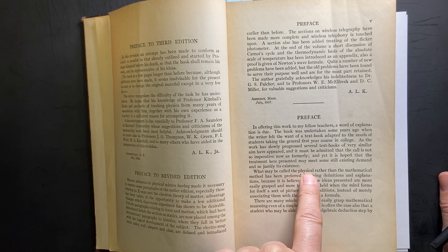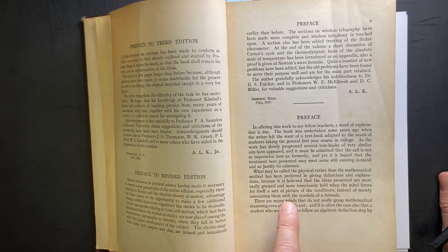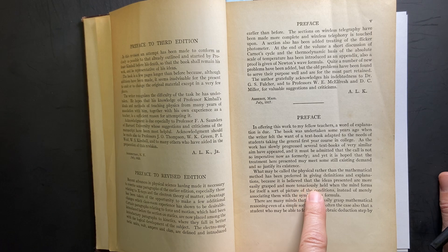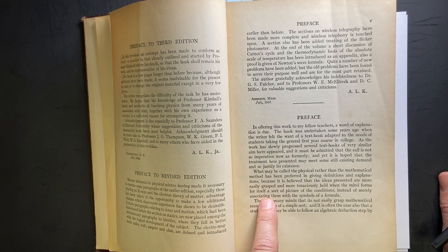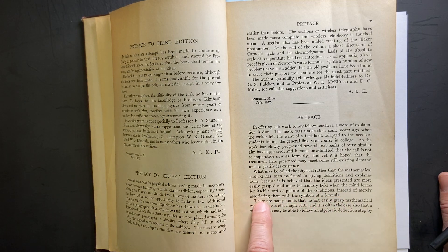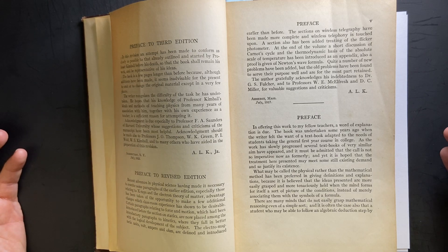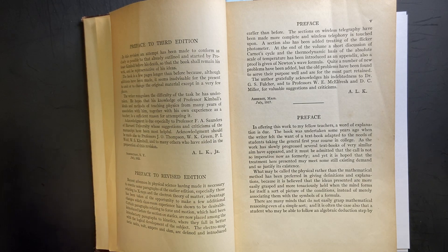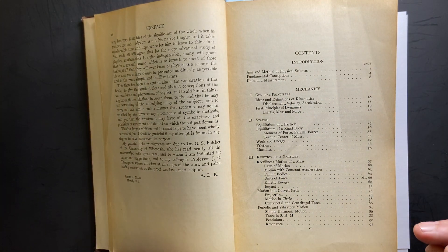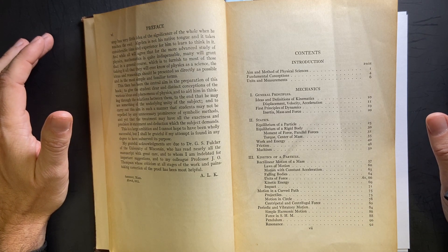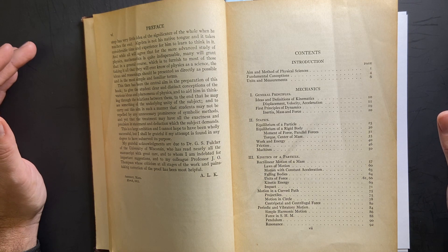So, what may be called the physical rather than the mathematical method have been preferred in giving definitions and explanations because it is believed the ideas presented are more easily grasped and more tenaciously held when the mind forms for itself a sort of picture of the conditions instead of merely associating them with the symbols of a formula. So, the author wants to kind of... I think this would be your conceptual physics book, right? It's like, let's not worry about the math so much. But I think that they've gone too far, right? There's some things where if you don't want to get into the math, then you really can't just talk about it in words.